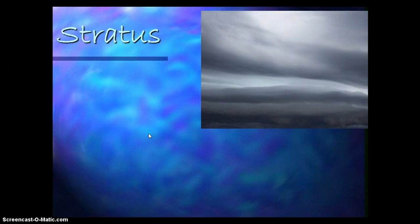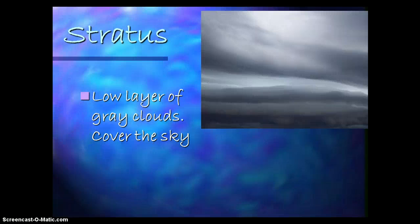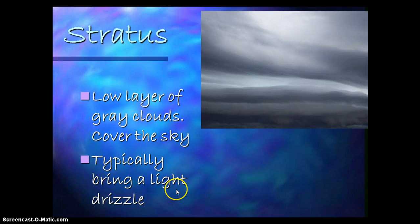The next cloud we're talking about are stratus, which are those low ones. Students, show it and say it. Three, two, one. Stratus! Okay. Our stratus clouds are a low layer of gray clouds and they typically cover the sky. Typically, they bring a light drizzle or some sort of rain.